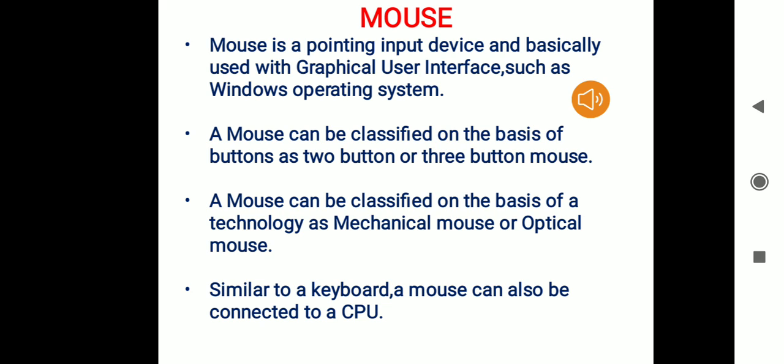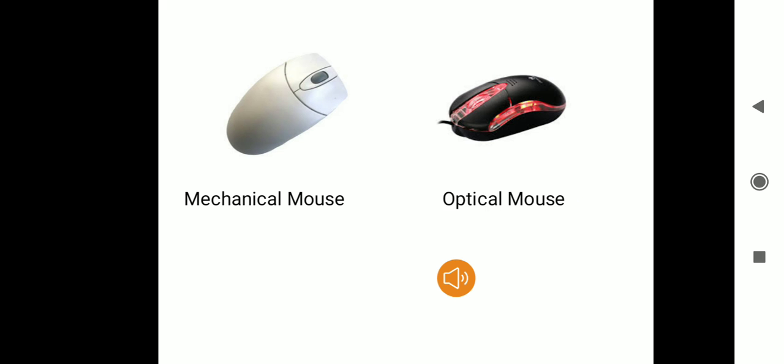The only difference between the mechanical mouse and the optical mouse is that the mechanical mouse does not emit light, whereas the optical mouse emits light. Just like the keyboard, the mouse can also be connected to the central processing unit through some ports. The figure shows a mechanical mouse and an optical mouse — you can clearly see the difference: the mechanical mouse does not emit light whereas the optical mouse is emitting light.